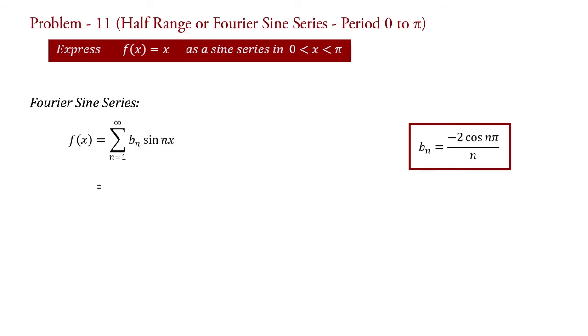Putting this value of bn in this sine series, we get f of x equal to summation n equal to 1 to infinity minus 2 cos n π upon n into sin nx.